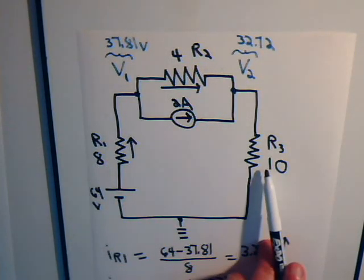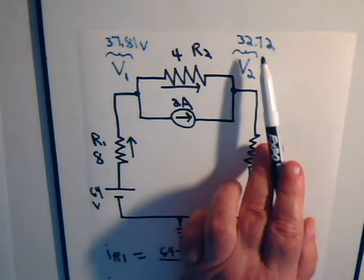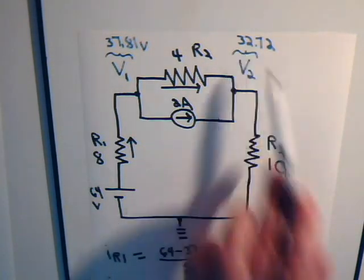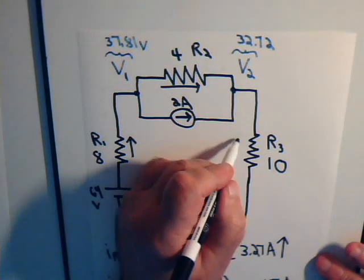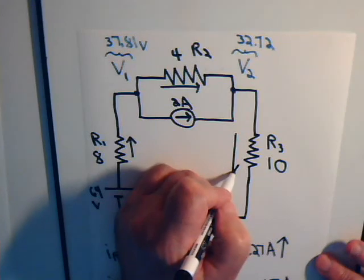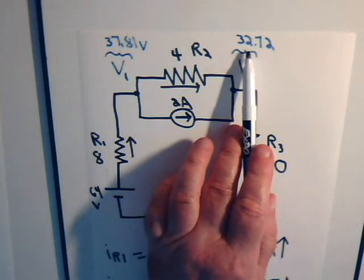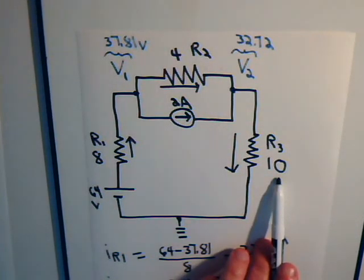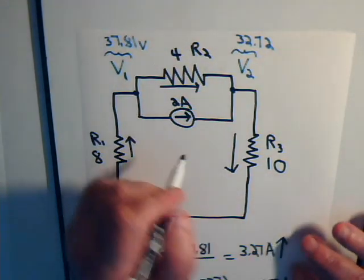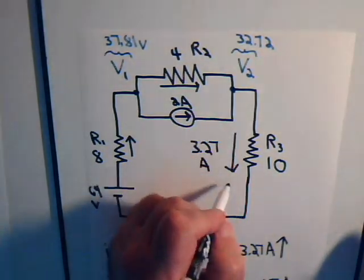Now for resistor R3, this is at zero potential and this is 32.72 volts, so the current is going down. It will be equal to that voltage divided by 10 ohms, so that's 3.27 amps going down.